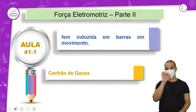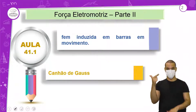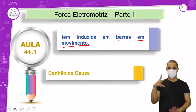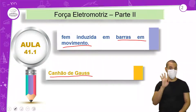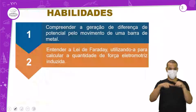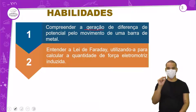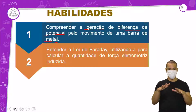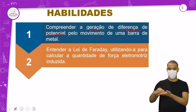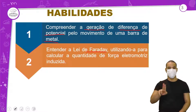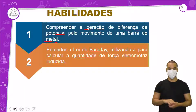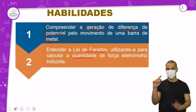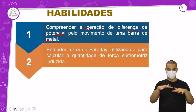Força eletromotriz parte 2. Tivemos a primeira parte com a introdução do conteúdo, e agora vamos falar da FEM induzida em barras em movimento e canhão de Gauss. A habilidade é compreender a geração de diferença de potencial pelo movimento de uma barra de metal, com os elétrons se moverem e polarizarem negativamente uma parte e positivamente a outra extremidade da barra. Também entender a lei de Faraday, utilizando-a para calcular a quantidade de força eletromotriz induzida — a indução de uma corrente através desse movimento em um campo magnético uniforme.